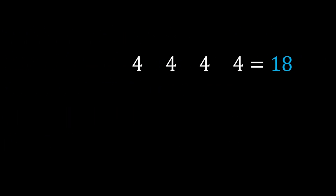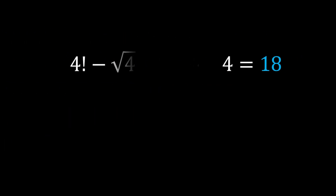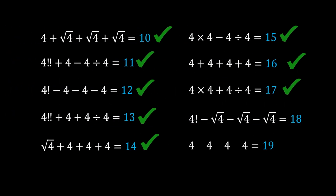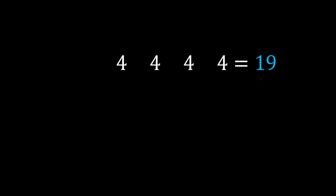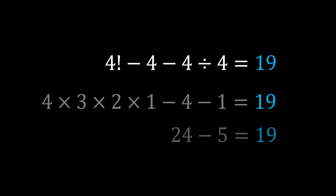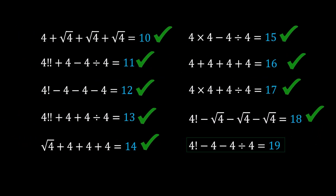Number 18: 4! − √4 − √4 − √4 = 24 − 6 = 18. Number 19: 4! − 4 − 4 ÷ 4 = 24 − 5 = 19. And there we have all numbers from 10 to 19.